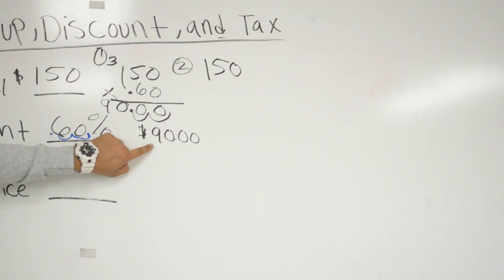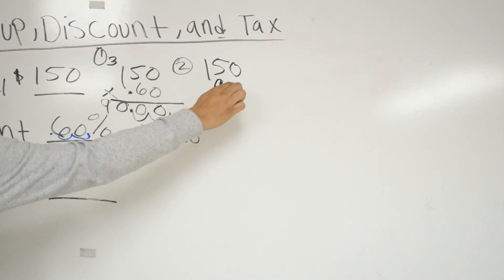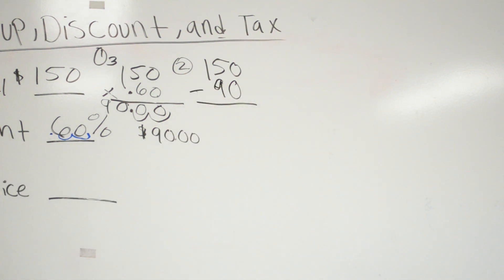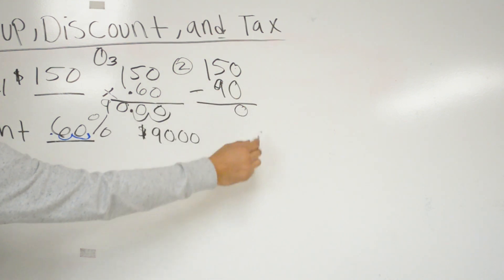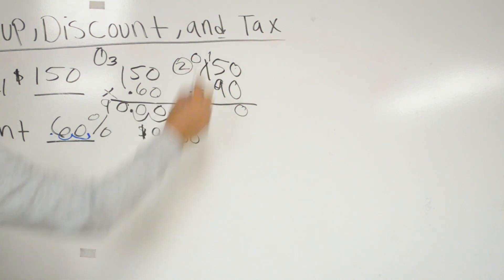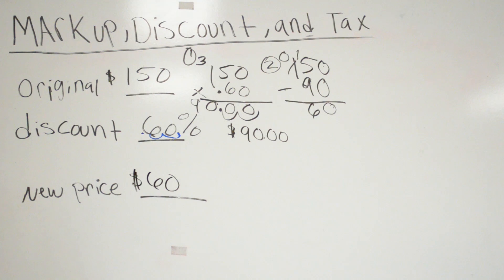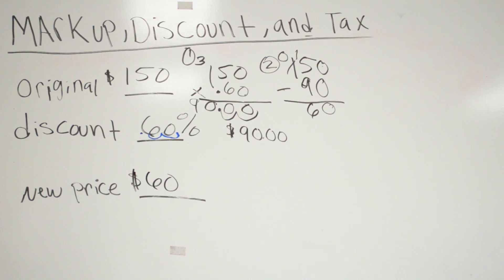Step two: take the original price, which is $150, minus the discount, which is $90. 0 minus 0 is 0; 5 minus 9 — we can't, so we borrow: 15 minus 9 is 6. So my final price for that item is $60.